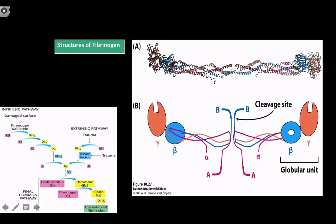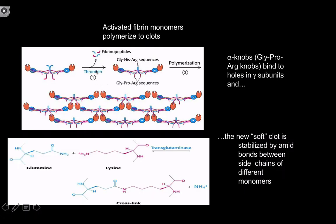Once we activate thrombin, it acts on fibrinogen to convert it to fibrin. Fibrinogen has three chains — alpha, beta, and gamma. On the beta and gamma globular units, there are binding sites that are revealed after proteolysis by thrombin, allowing cross-linking to take place — not just between the alpha and gamma chain, but the globular head unit can bind with the beta cleavage site as well. These regions tend to be rich in glycine and arginine. Once we form this interlocking structure, we have a soft clot, and then transglutaminase comes in to catalyze covalent bond formation, creating a thick, dense fibrin mesh.